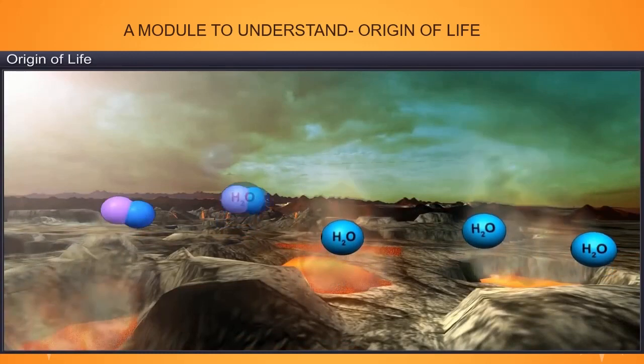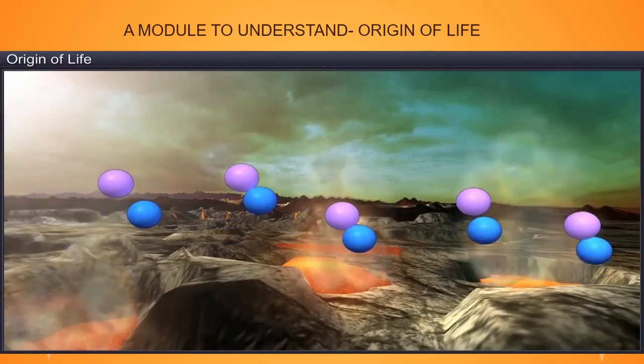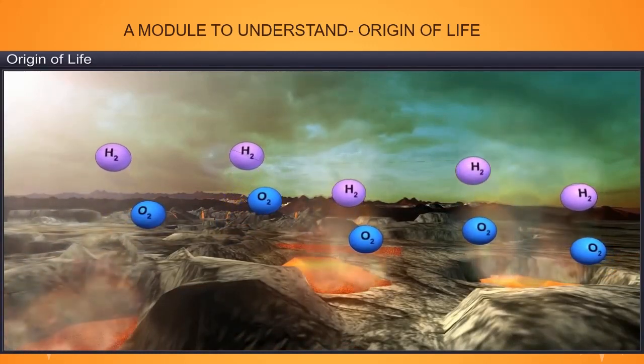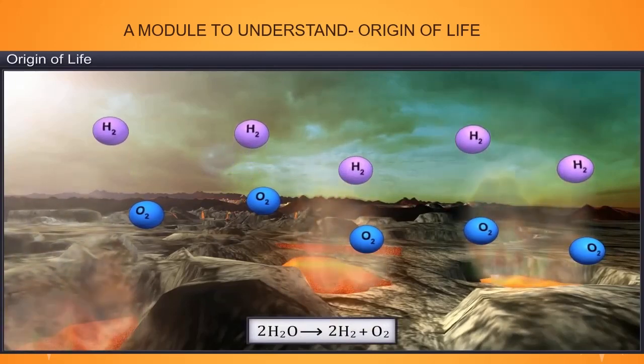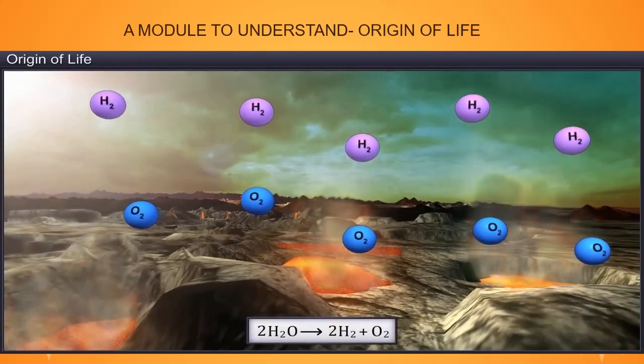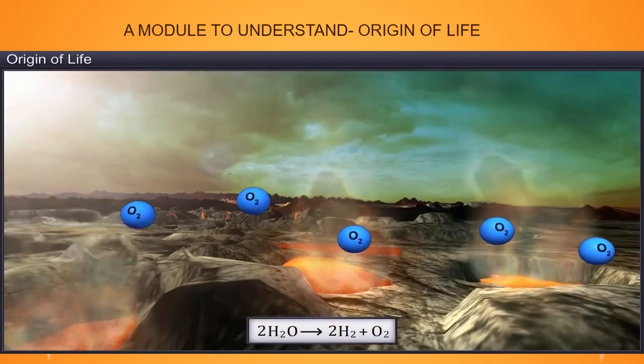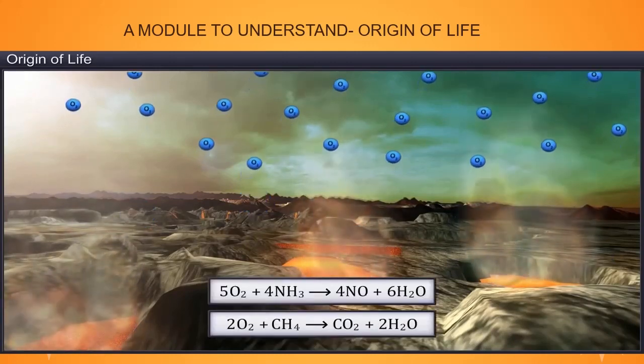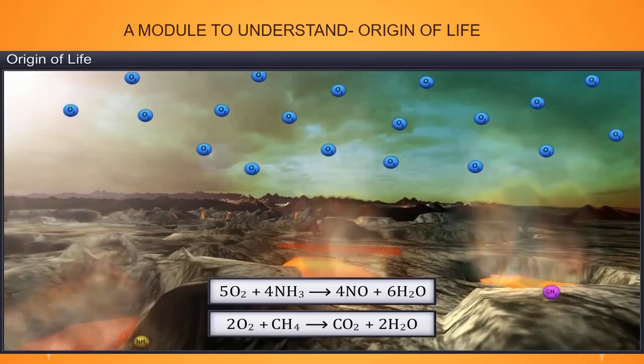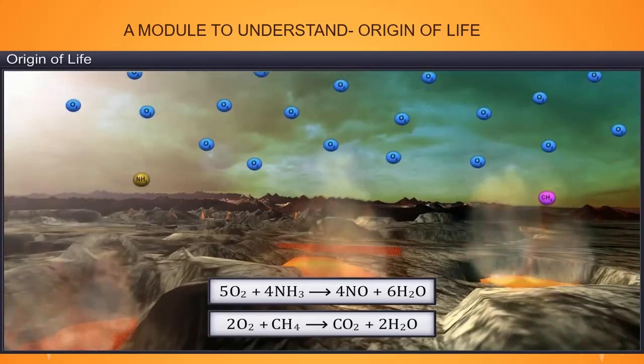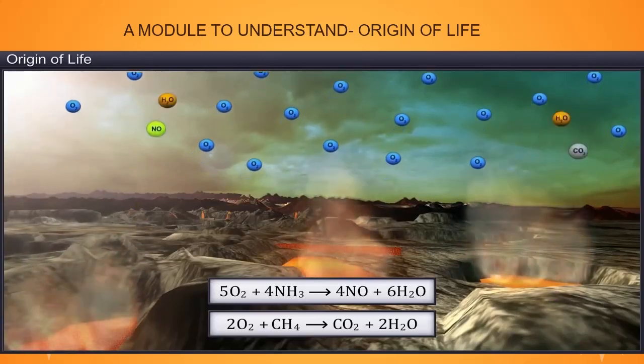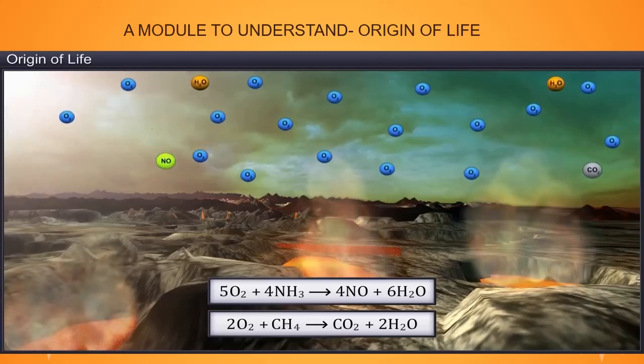Gradually, the ultraviolet rays of the sun broke up the water, which was in vapor state, into hydrogen and oxygen. Hydrogen, being a lighter gas than oxygen, escaped. Thereafter, oxygen combined with ammonia and methane, which led to the formation of water, carbon dioxide and other gases.